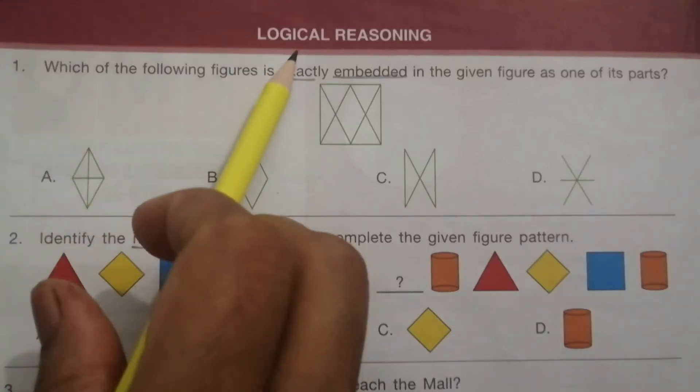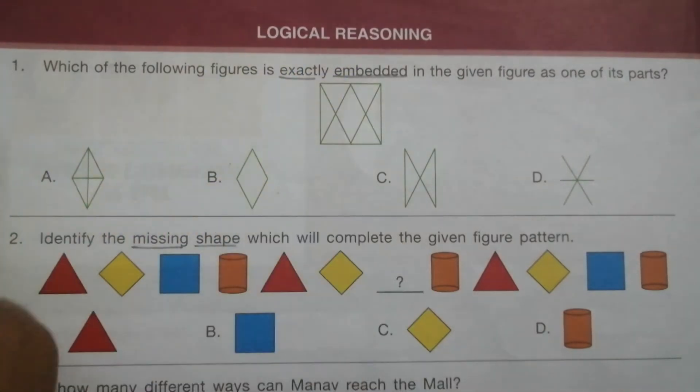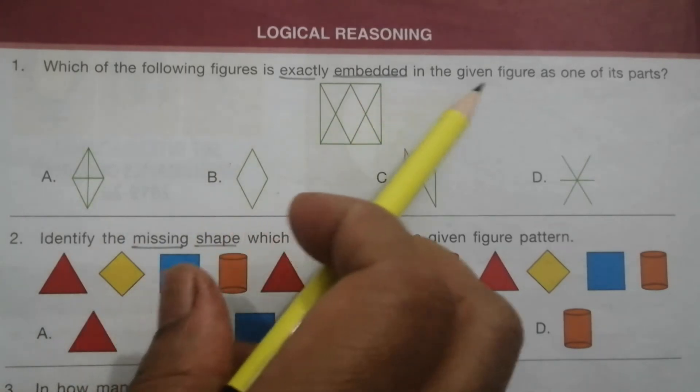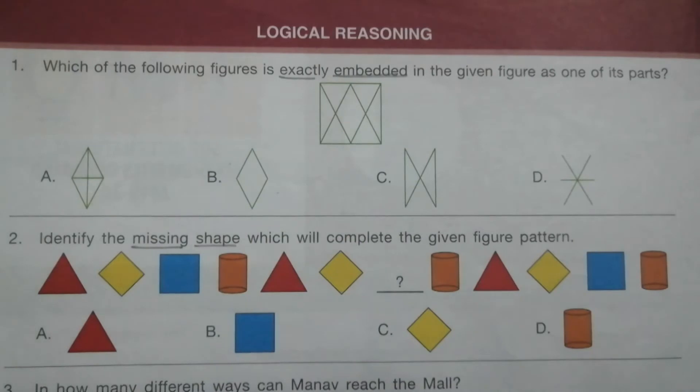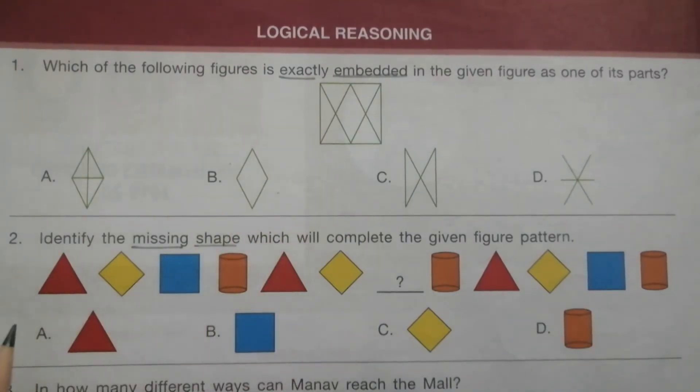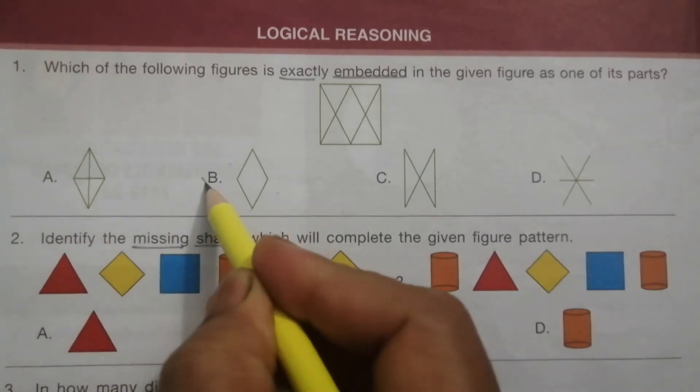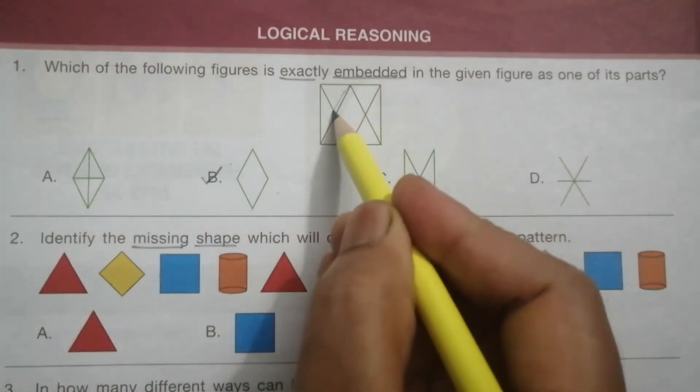First topic is logical reasoning. Problem 1: Which of the following figures is exactly embedded in the given figure as one of its part? This is the given figure, and these are the options. So the answer is B.